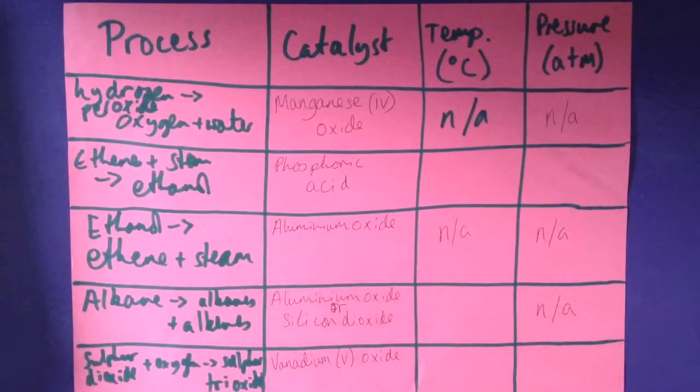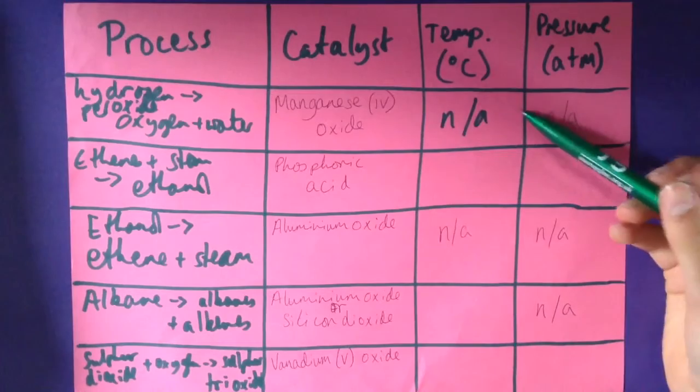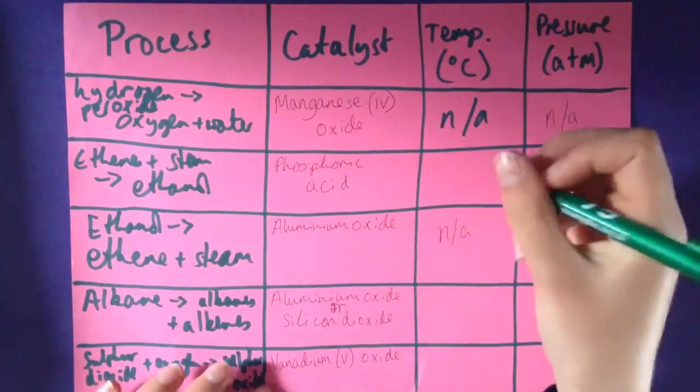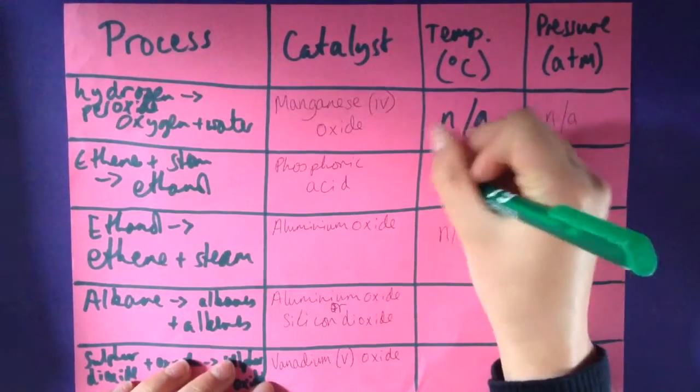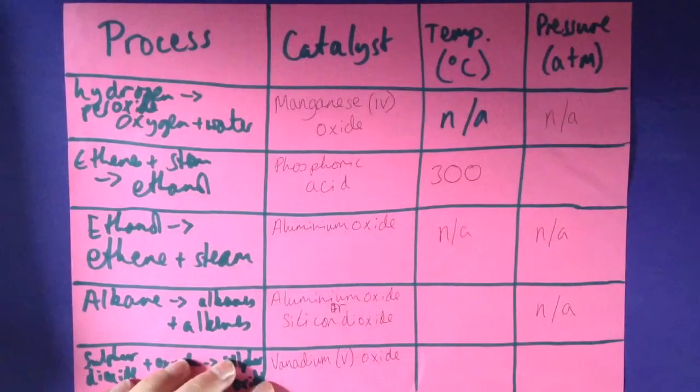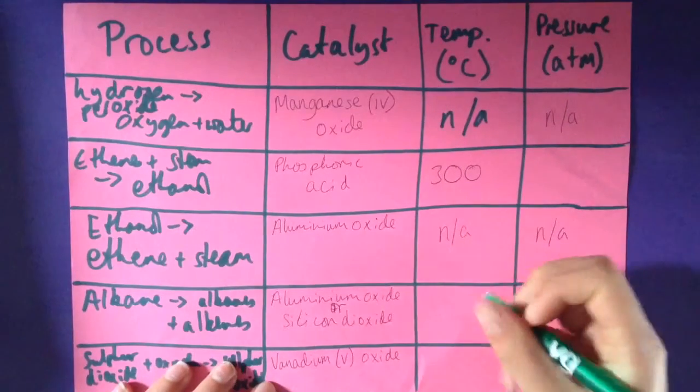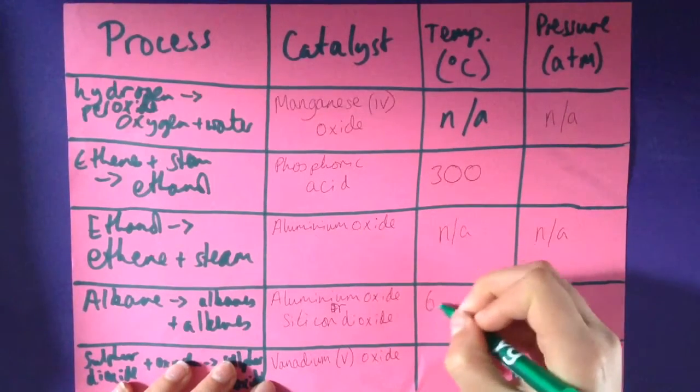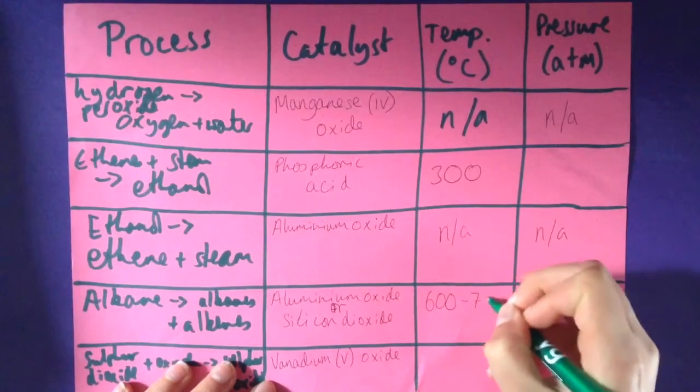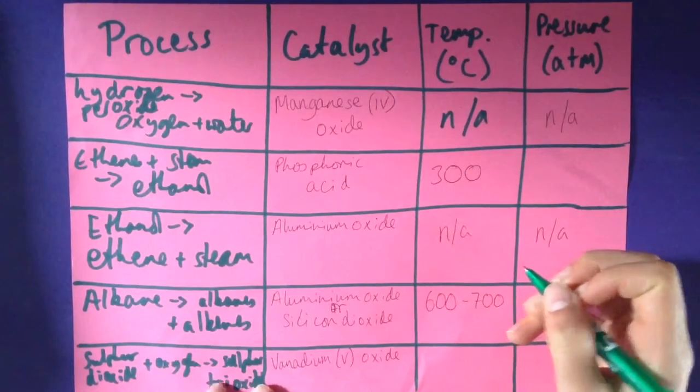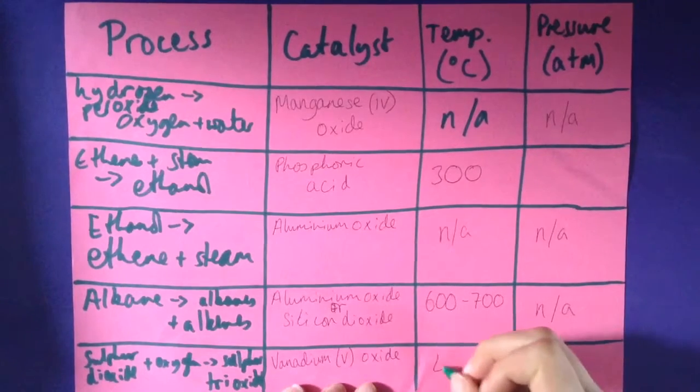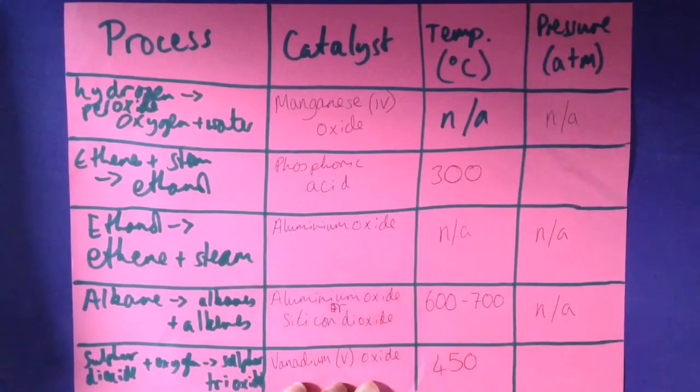Now for the temperatures. I said we don't need the temperatures for either of these two, but for ethene and steam combining to make ethanol it's 300 degrees Celsius. The cracking of alkanes is 600 to 700 degrees Celsius, and the combining of sulfur dioxide and oxygen is 450 degrees Celsius.